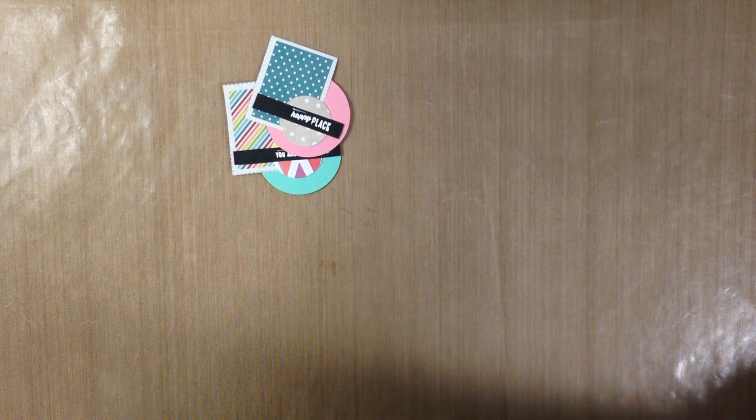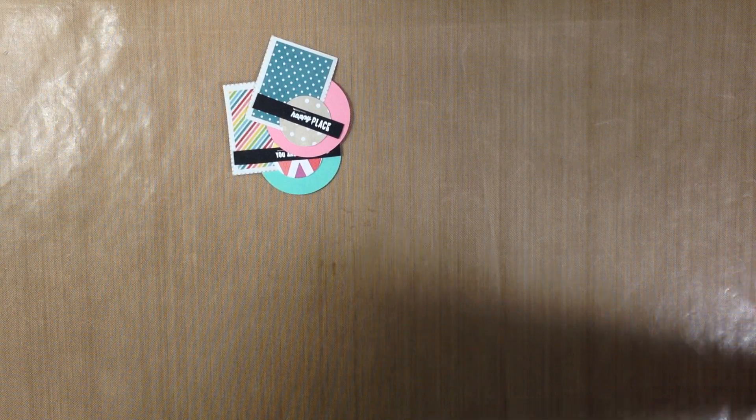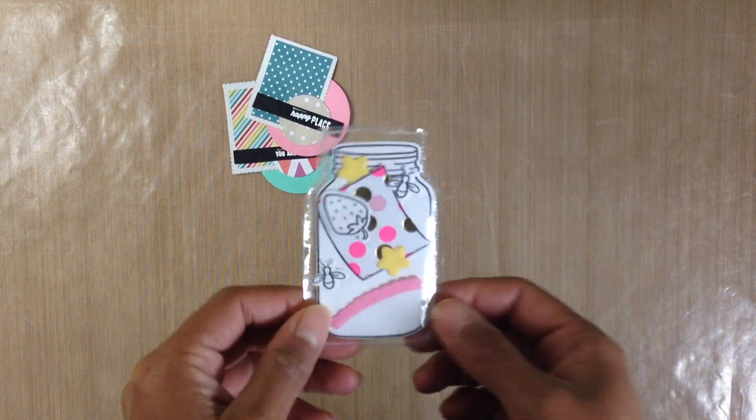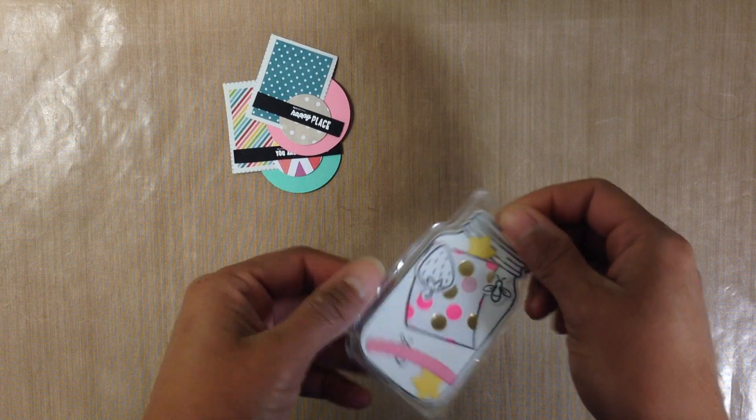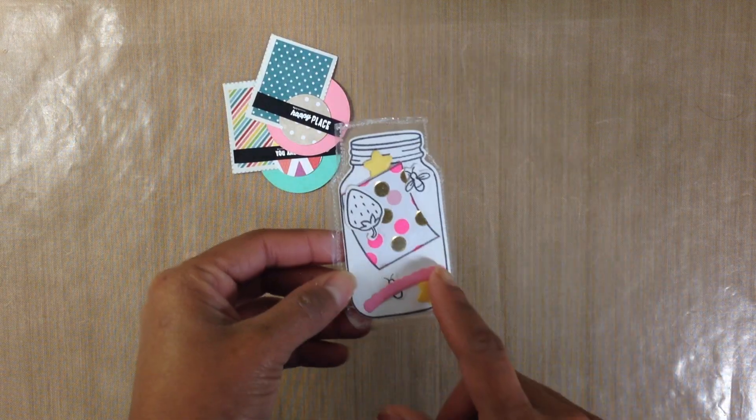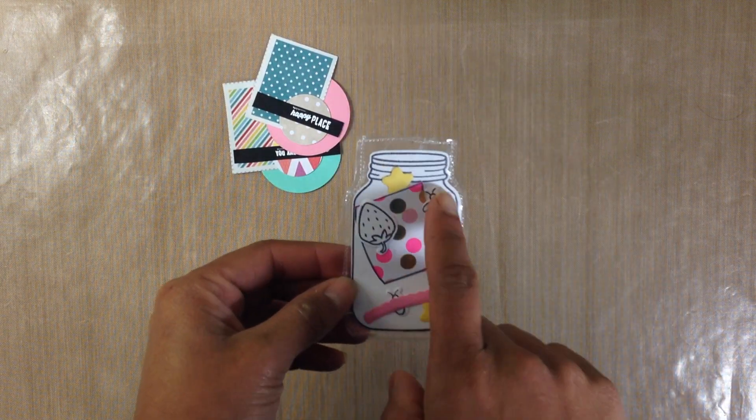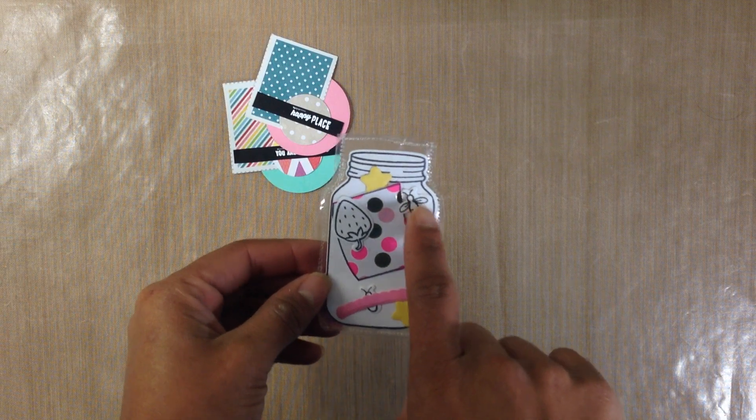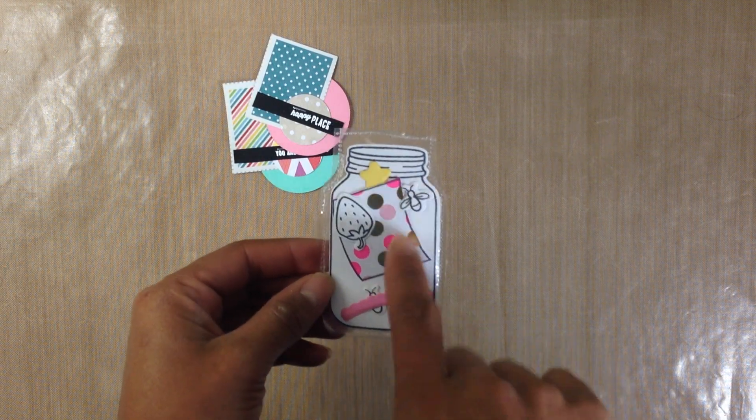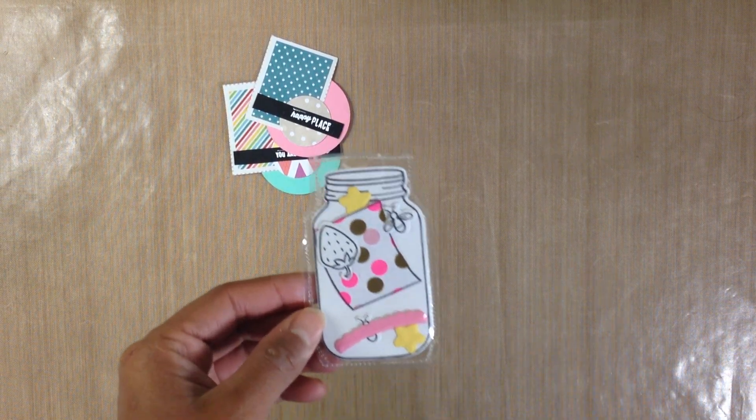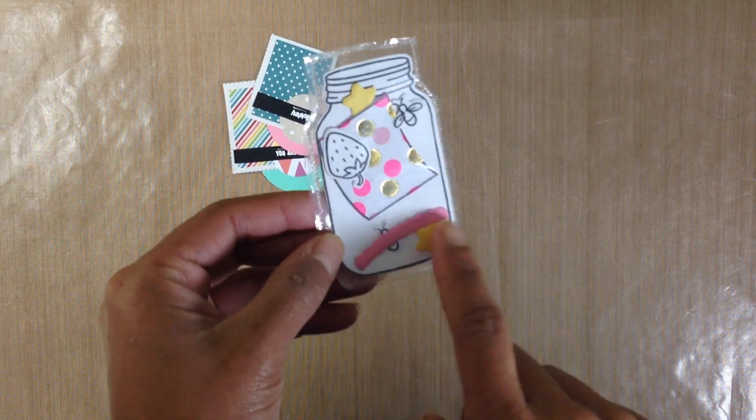I created these little kits here and it's like a make your own mason jar kit and it comes with the mason jar stamp, a die cut, some strawberries, some little glow, what are those called? Fireflies?